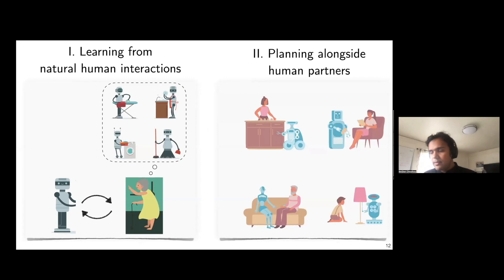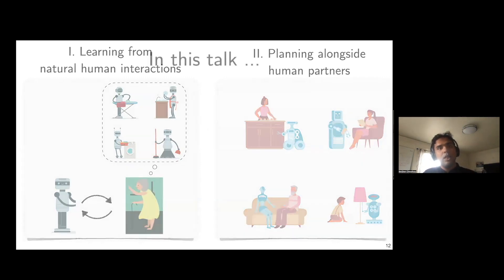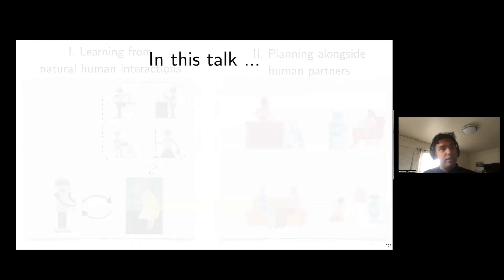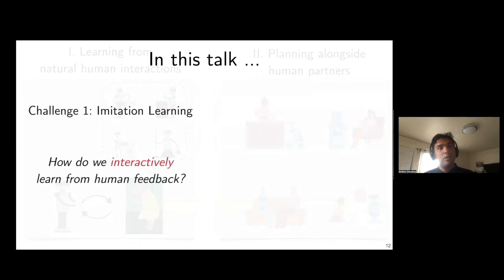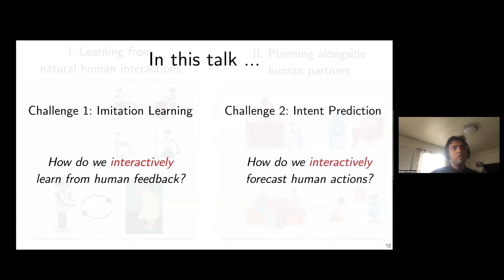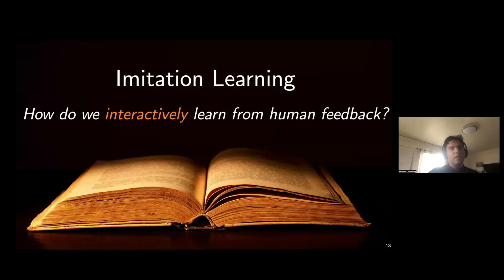Returning to our original picture, today we'll talk about two challenges. First, imitation learning: how do we interact with the human to learn the optimal policy? Second, intent prediction: how do we interactively forecast human actions, conditioned on the actions the robot takes?